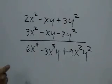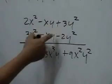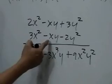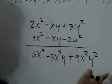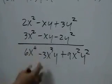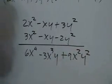Next, we multiply the same three terms, but this time by negative xy, writing the result in this line and making sure the similar terms fall in the same column.